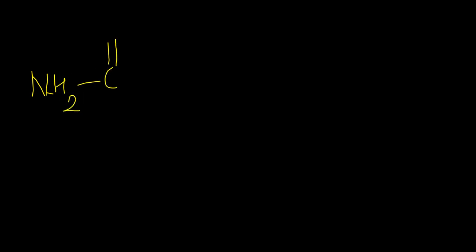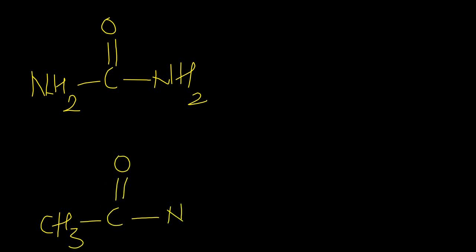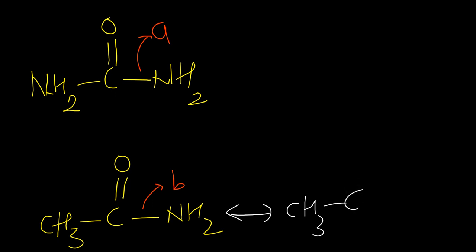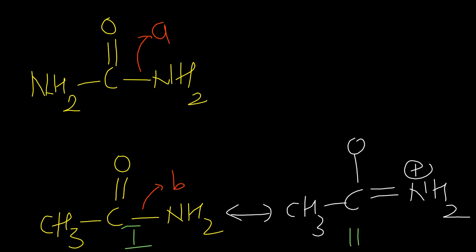Next question on the same line: we have NH₂C double bond O NH₂ (molecule A) and CH₃C double bond O NH₂ (molecule B), and again the same question comparing A and B. I think you can solve it easily. In this case, it will have one resonating structure — the resonating structures become first and second. Definitely, the first contribution will be a little more than the second because the first structure is more stable.